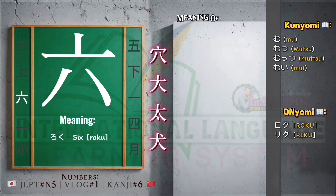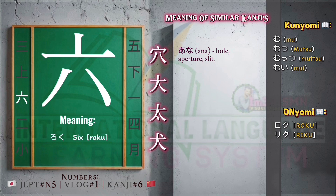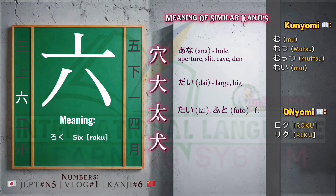Meaning of similar kanjis. Ana: hole, aperture, slit, cave, den. Dai: large, big. Tai: fat, plump, thick, big around. Inu: dog.